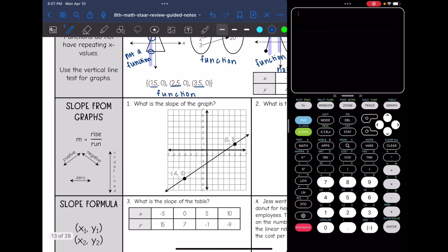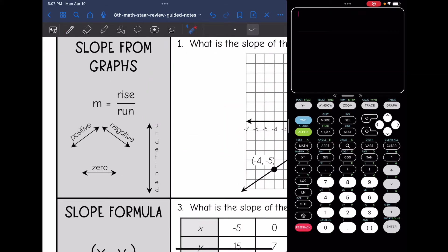Let's look at slope from graphs. So remember to find the slope from a graph, we'll count the rise over the run to get from one point to another. And there's four types of slopes: the most common are a positive line where it's increasing, a negative line where it's decreasing, zero slope where there is a horizontal line, and then your vertical line is an undefined slope.